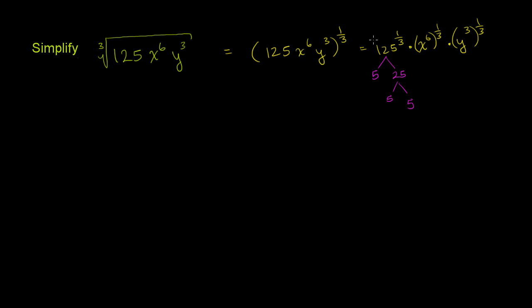So 125 to the 1/3 power is 5. This simplifies to 5 times x to the 6th to the 1/3 power. If you raise a base to an exponent and then raise that to another exponent, you multiply the exponents. So 6 times 1/3 is 6/3, or 2. This part simplifies to x squared.